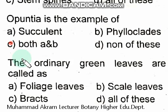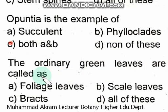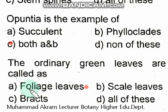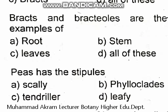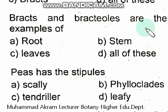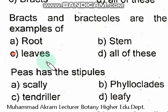The ordinary green leaves are called foliage leaves. Bracts and bracteoles are examples of — the right option is option C, leaves.